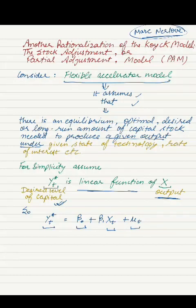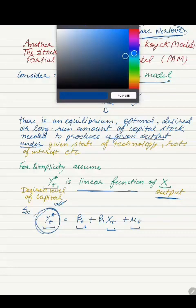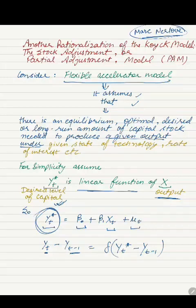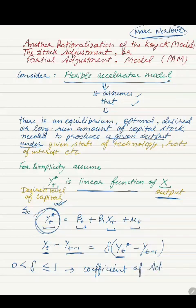Since the desired level of capital is not directly observable, Nerlove postulates the following hypothesis, which is called the partial adjustment or stock adjustment hypothesis. This hypothesis states that Yt minus Yt minus 1, that is the change in capital stock, will be equal to delta times Yt star minus Yt minus 1. Here, the value of delta is such that it is greater than 0 and less than or equal to 1, and it is also known as the coefficient of adjustment.